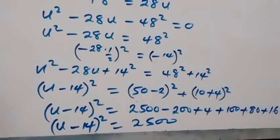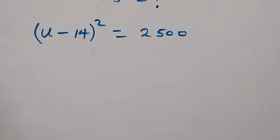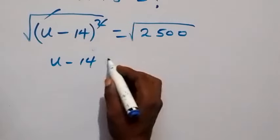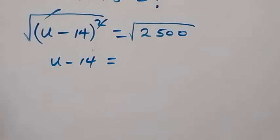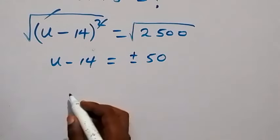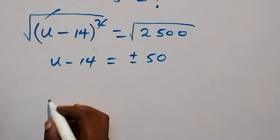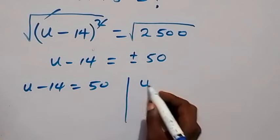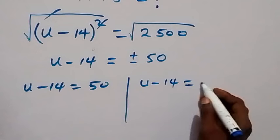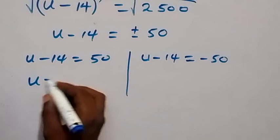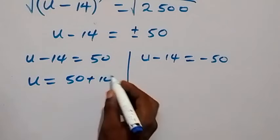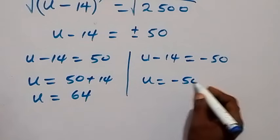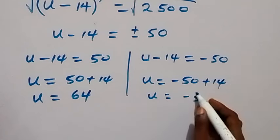Taking the square root of both sides, the square root of 2500 is 50, so u minus 14 equals plus or minus 50. This gives two cases: u minus 14 equals 50, so u equals 64; or u minus 14 equals minus 50, so u equals minus 36.